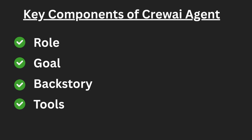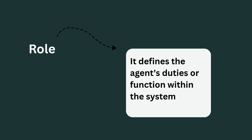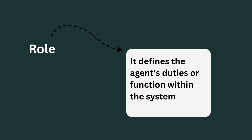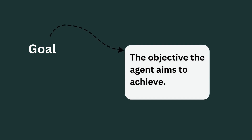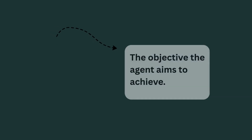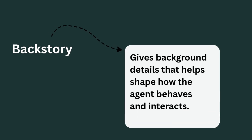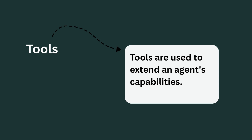Let's break down what makes up a CrewAI agent: we have the role, goal, backstory, and tools. The role describes what the agent is responsible for and how it fits into the overall system. The goal specifies the objective the agent aims to achieve, helping to provide direction for the agent's actions and decisions. The backstory gives background details that help shape how the agents behave and interact.